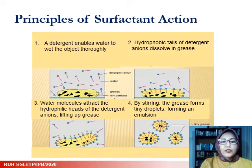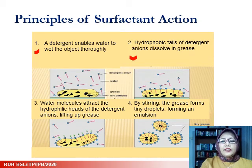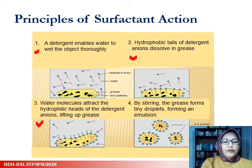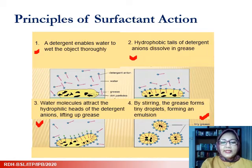This graph shows the principles of action of a surfactant or detergent. A detergent enables water to wet the object thoroughly. The hydrophobic tails of the detergent dissolve in the grease, while the water molecules attract the hydrophilic heads, lifting up the grease. With stirring, the grease forms tiny droplets forming an emulsion that allows the dirt to be removed by rinsing.